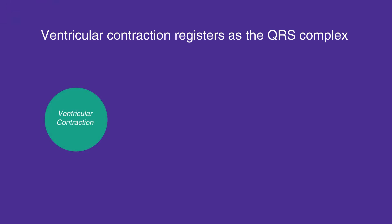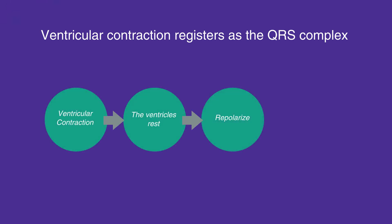Following ventricular contraction, the ventricles rest and repolarize, which registers as the T wave. The atria also repolarize, but this coincides with the QRS complex. Therefore, it cannot be observed on the ECG strip.